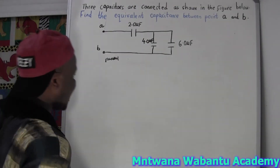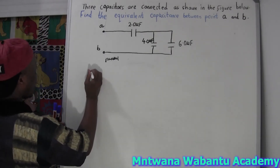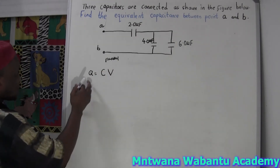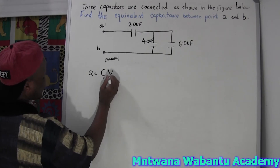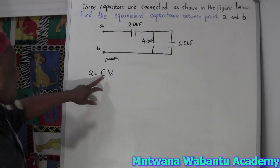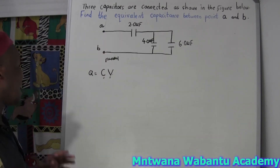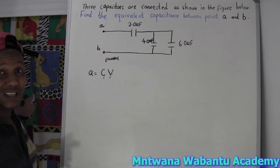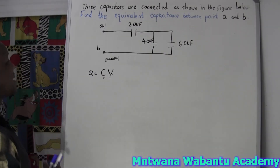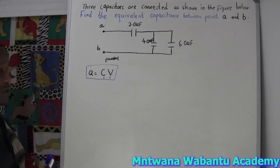Before the question, remember: quantity of charge Q equals capacitance C times potential difference V — so Q = C × V. Whether your capacitors are in series or in parallel determines which capacitance value and which potential difference value you use. In parallel you take the shared V; in series you take individual values. Keep that formula in mind.